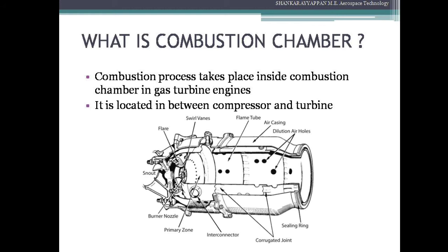The combustion process inside the combustion chamber is a continuous process which takes place at high pressure and high temperature in a smaller space. There are some basic requirements for the combustor. The first basic requirement is that pressure loss should be minimum, because we are considering a gas turbine engine where combustion takes place at constant pressure. The second requirement is combustion efficiency should be high at different operating and flight conditions. Thirdly, the outlet temperature distribution should be uniform so that the turbine blades are not affected by local overheating.